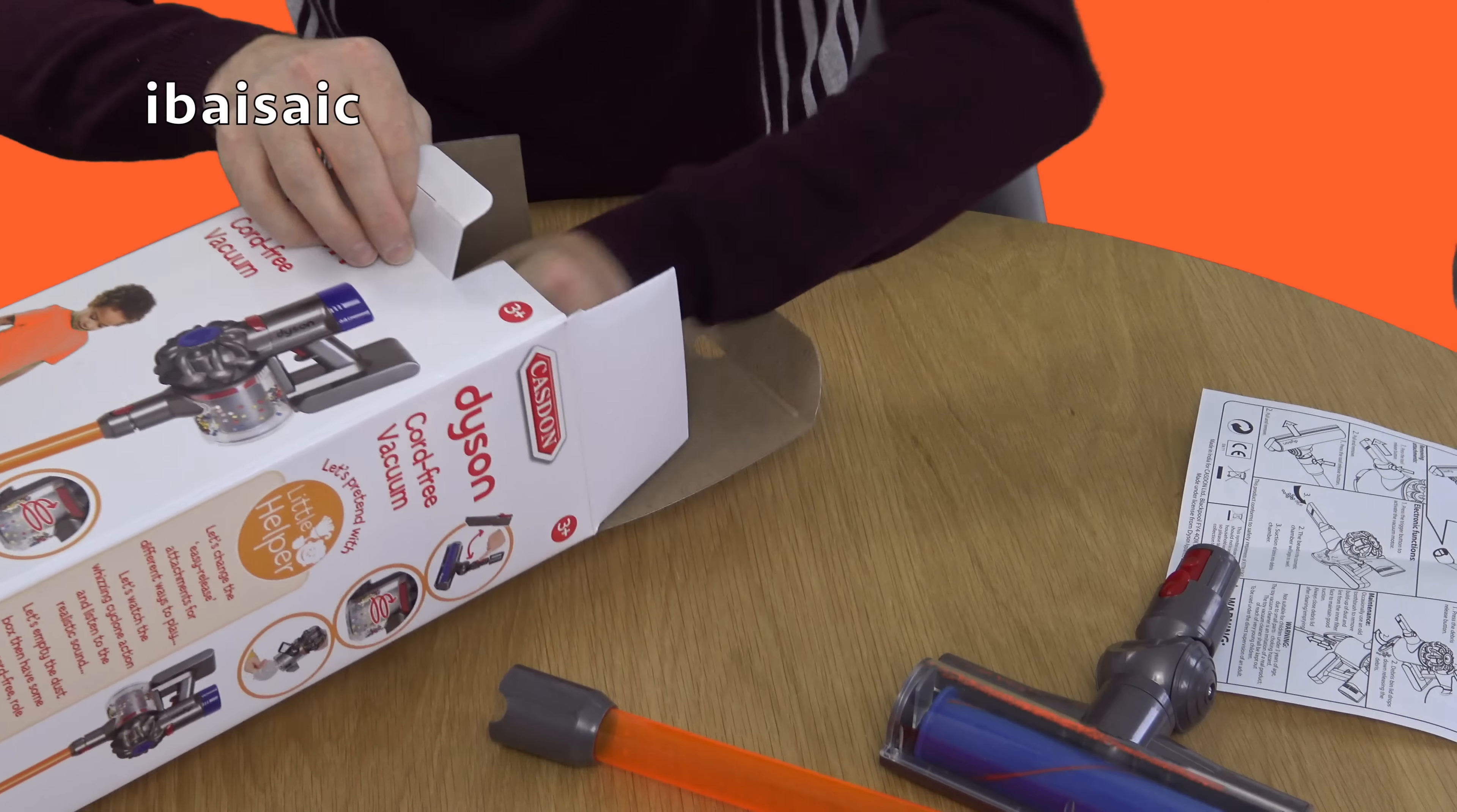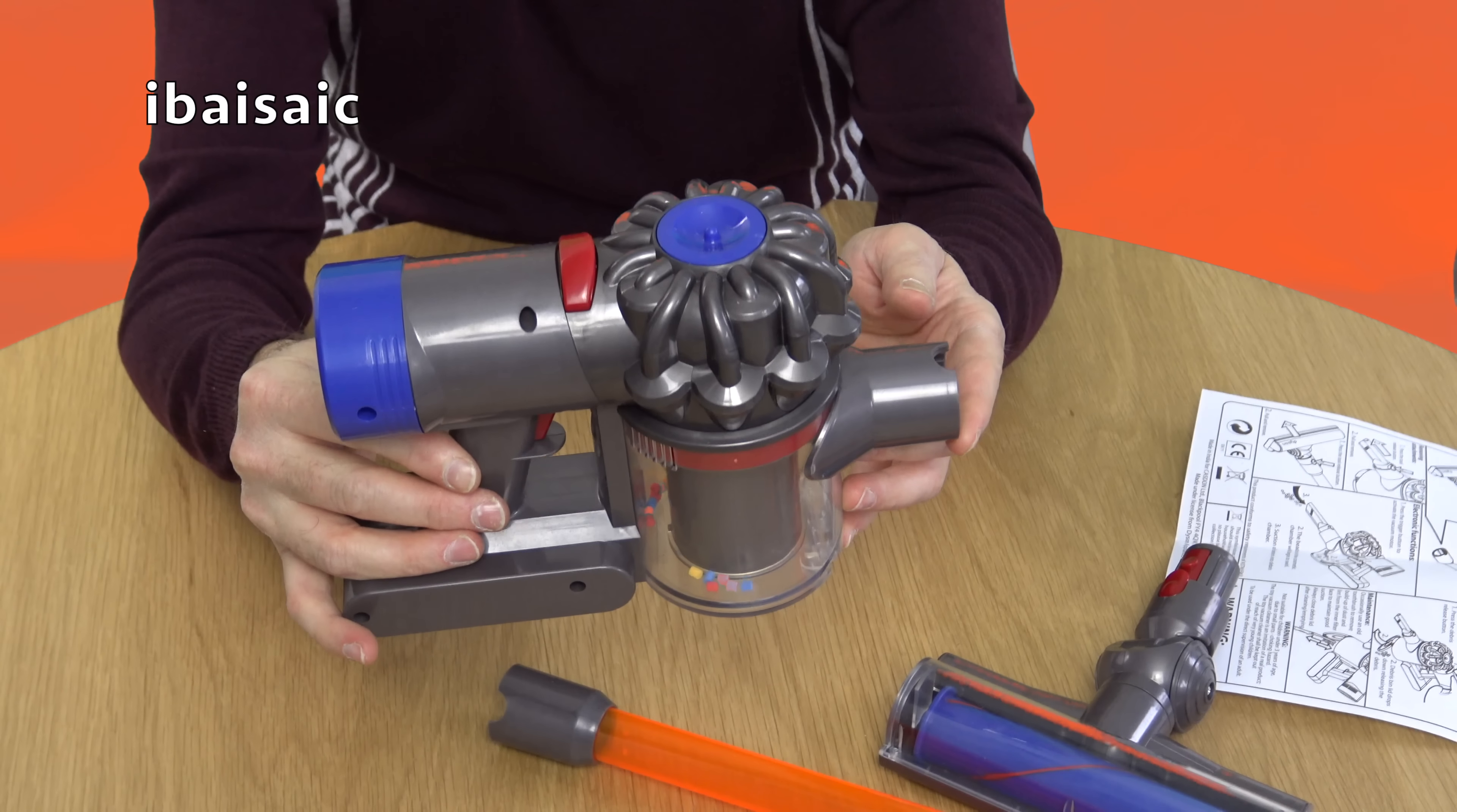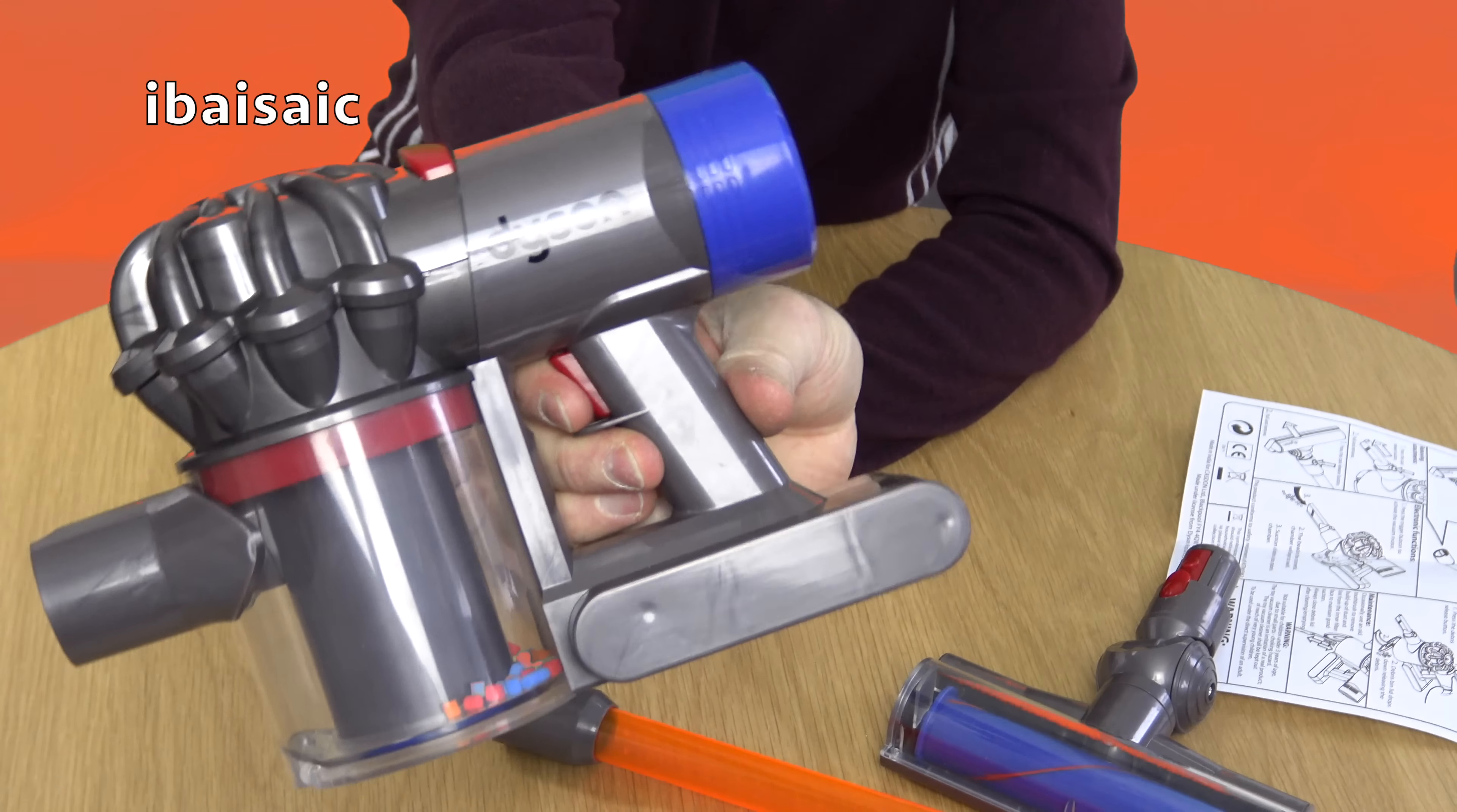And finally, I think that's everything. Double check. Finally we have the little Dyson itself. And it looks just like the big Dyson, but specially for smaller hands. Even got the little trigger there, look.